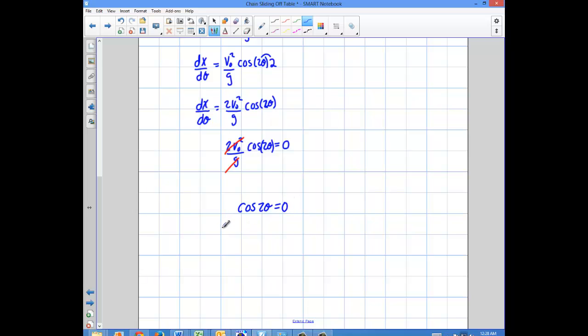And I'm going to have to take the inverse cosine of each side. Inverse cosine of cosine 2 theta equals the inverse cosine of 0. Now, let's think about something here. Where is the inverse cosine defined? Because remember, they're defined in different regions. So I'm just going to give you a little review here.